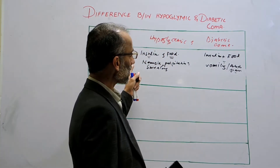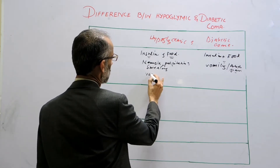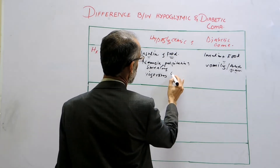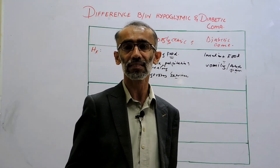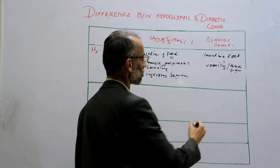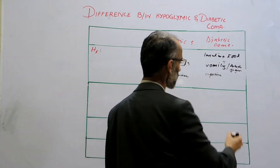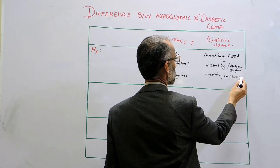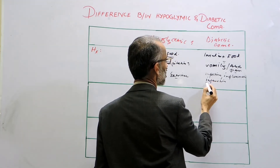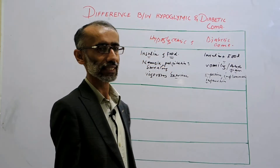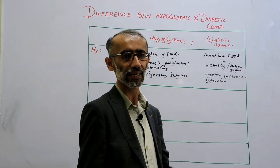What are the precipitating factors? In case of hypoglycemic coma, the precipitating factor is vigorous or unaccustomed exercise. While in case of diabetic coma, the precipitating factors are underlying occult infection, inflammation, and infarction — remember the three I's: infection, inflammation, and infarction.